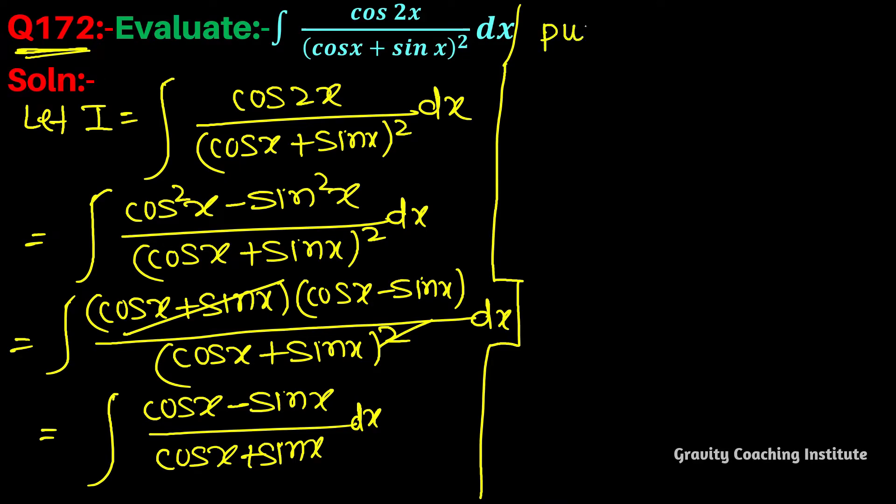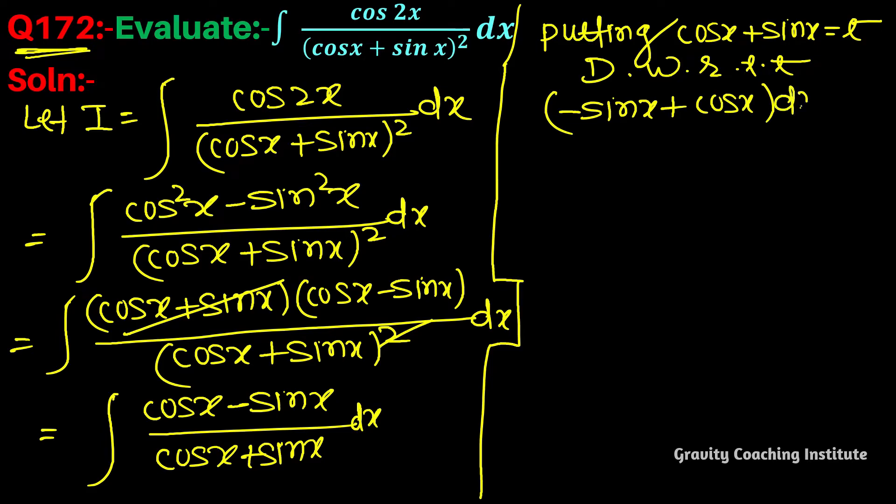So putting cos x plus sin x equal to t, now differentiate with respect to x. The differentiation of cos x is minus sin x and sin x is cos x. So cos x minus sin x times dx equals dt.